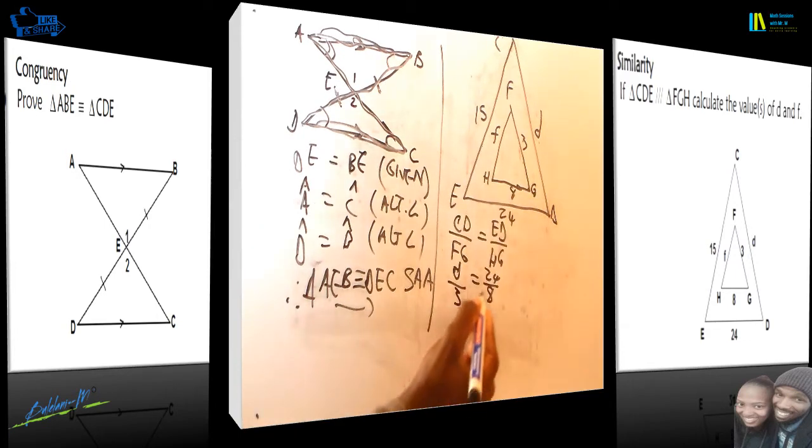Therefore, 24 divided by 8 is going to be 3. 3 times 3, you are going to get d that is equal to 9. So we find that side to be 9.